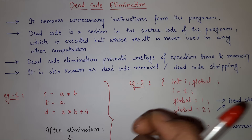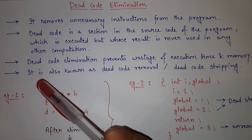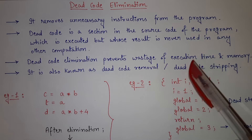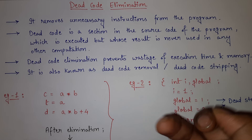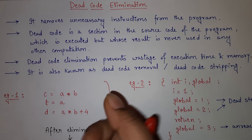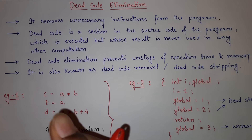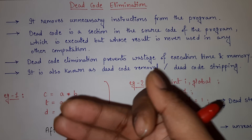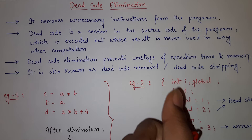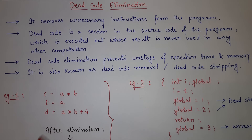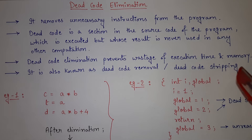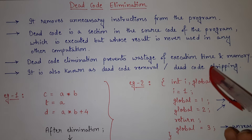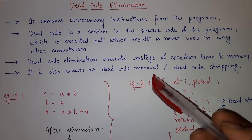We can simply remove that dead code. Why remove or eliminate dead code? Dead code elimination prevents wastage of execution time and memory. If dead code is present in our program, that piece of code, though unused, will still take execution time as well as memory. By eliminating it, we can make our program faster and reduce memory usage, using both memory and time efficiently. Dead code elimination is also known as dead code removal or dead code stripping.